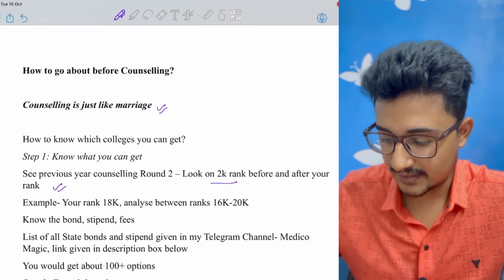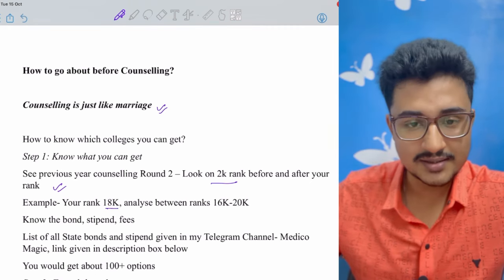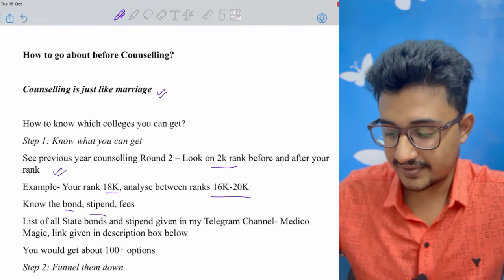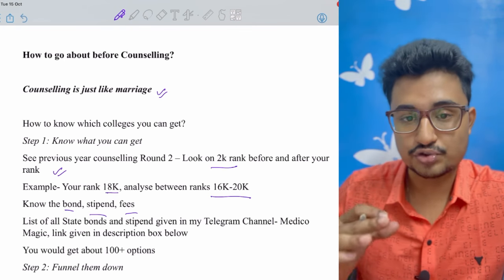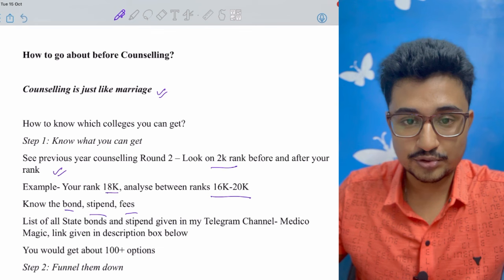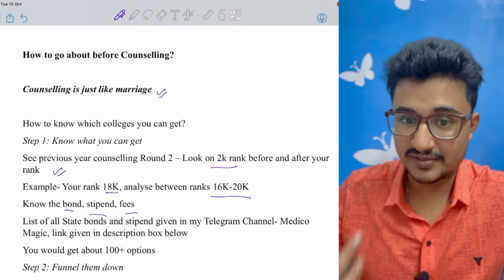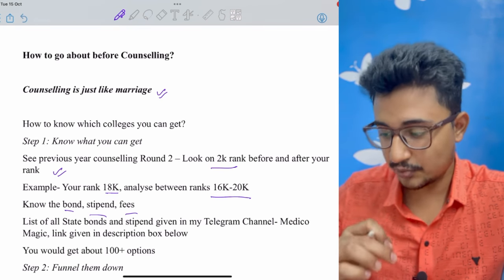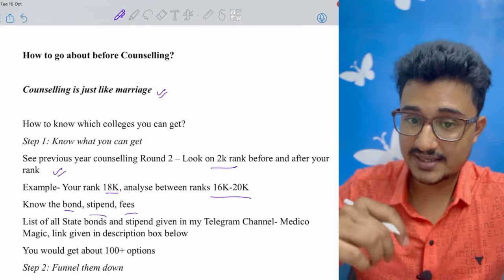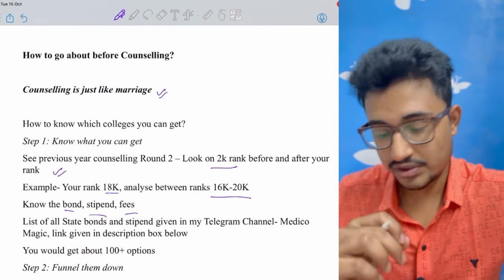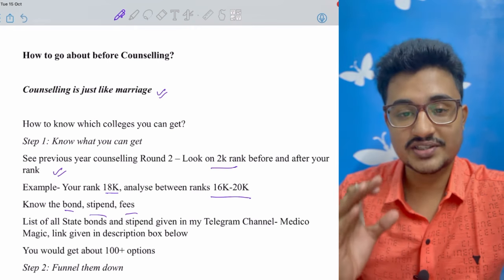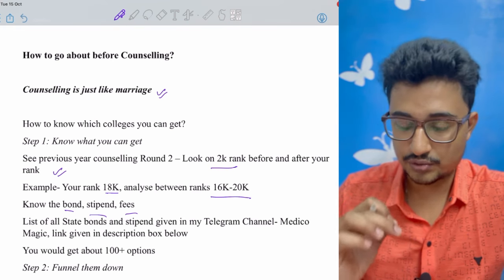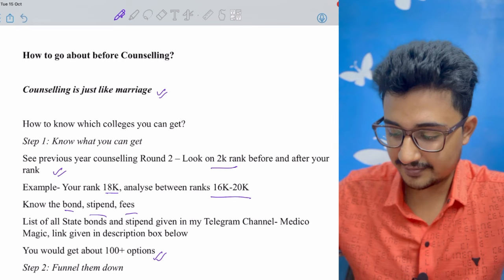For example, you have an 18,000 rank. Then you analyze the colleges they are getting from 16,000 to 20,000. Know the bond, fee, stipend because many times it happens that you join a certain college then later you come to know that it has a bond of three years or maybe five years. All the information regarding all the state bond, stipend, fees is all available in my Telegram channel. The link is given in the description box below, so go check out all the bond, stipend, fees information and then take informed decision about which all colleges you are going to keep. You can have at this point of time 50 to 100 options.